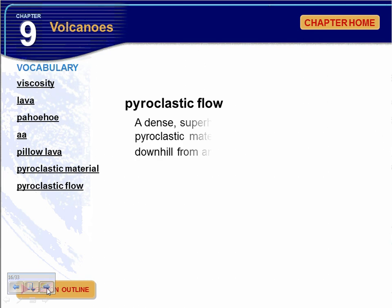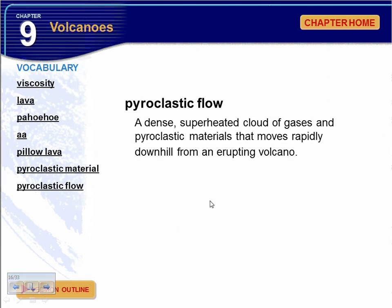Pyroclastic flow is a dense, superheated cloud of gas and material that moves rapidly downhill from an erupting volcano — we'll see evidence of that in the Dante's Peak video as well. This concludes the lecture notes for Section 2.